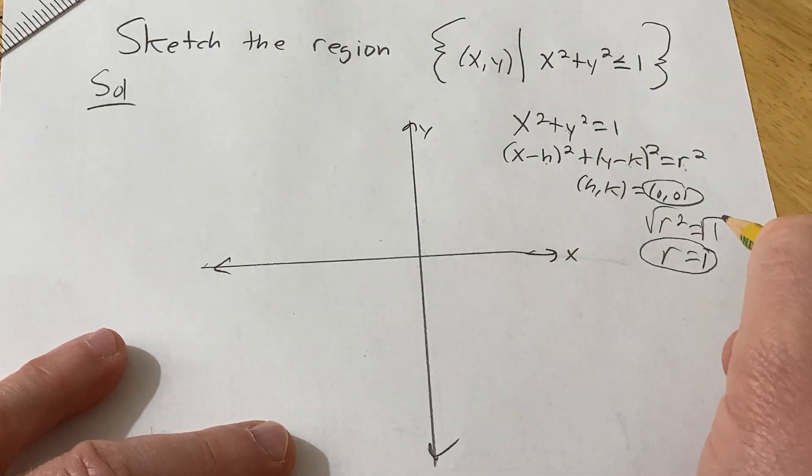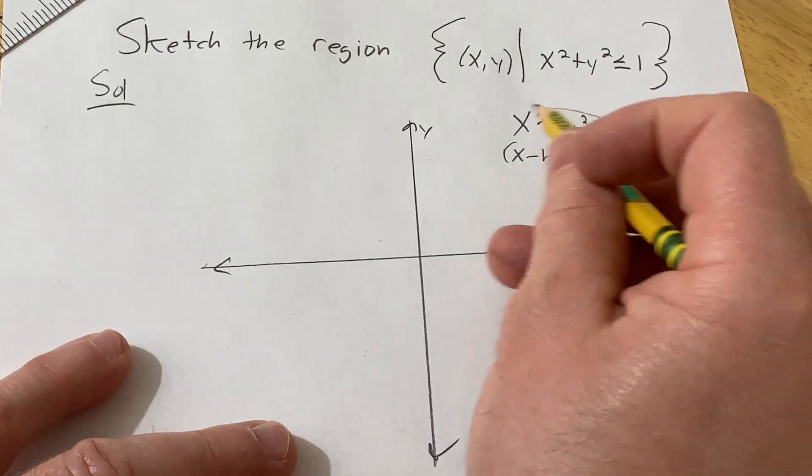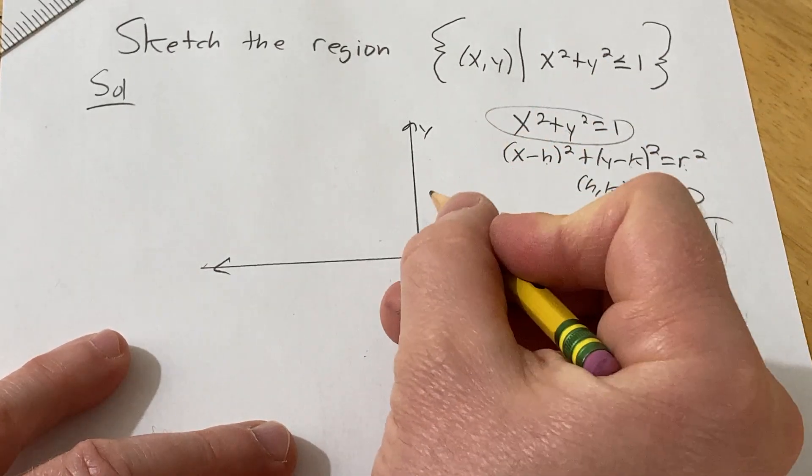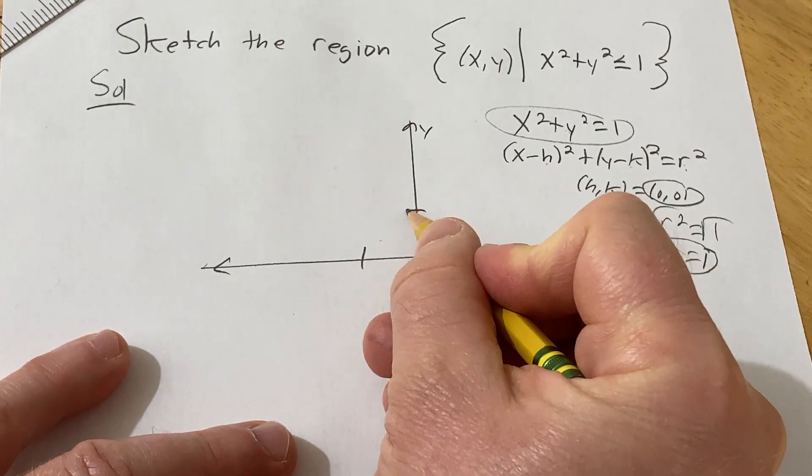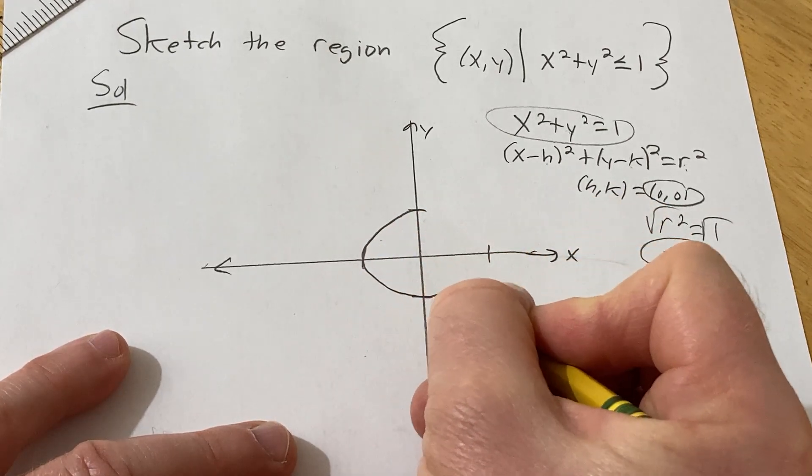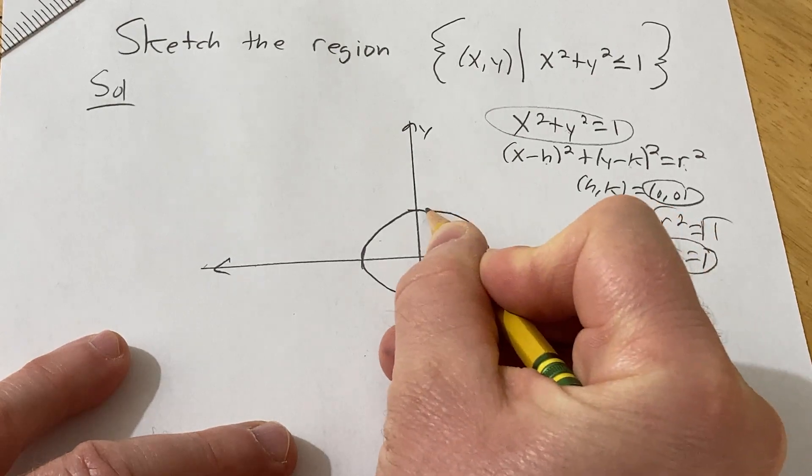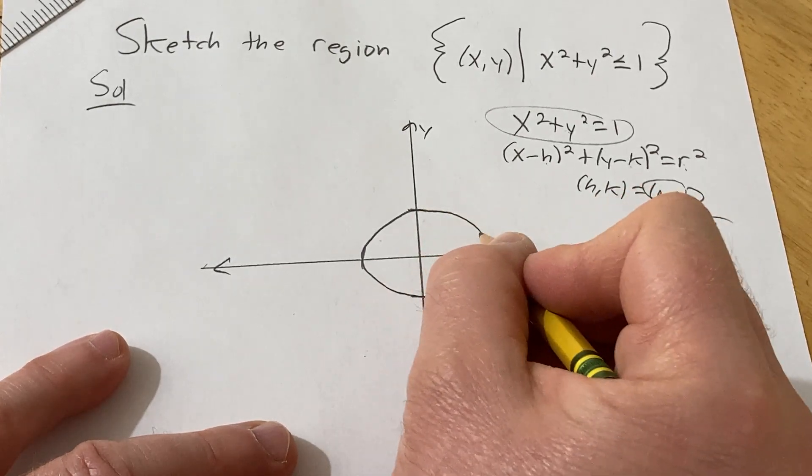So this is a circle centered at the origin with radius 1. This is called the unit circle, by the way, and if you study trigonometry, you'll learn all about it. So let's draw a picture of it. And so it's going to look something like this. So this is just the circle x squared plus y squared equals 1. These are all the points on the circle that I've graphed.